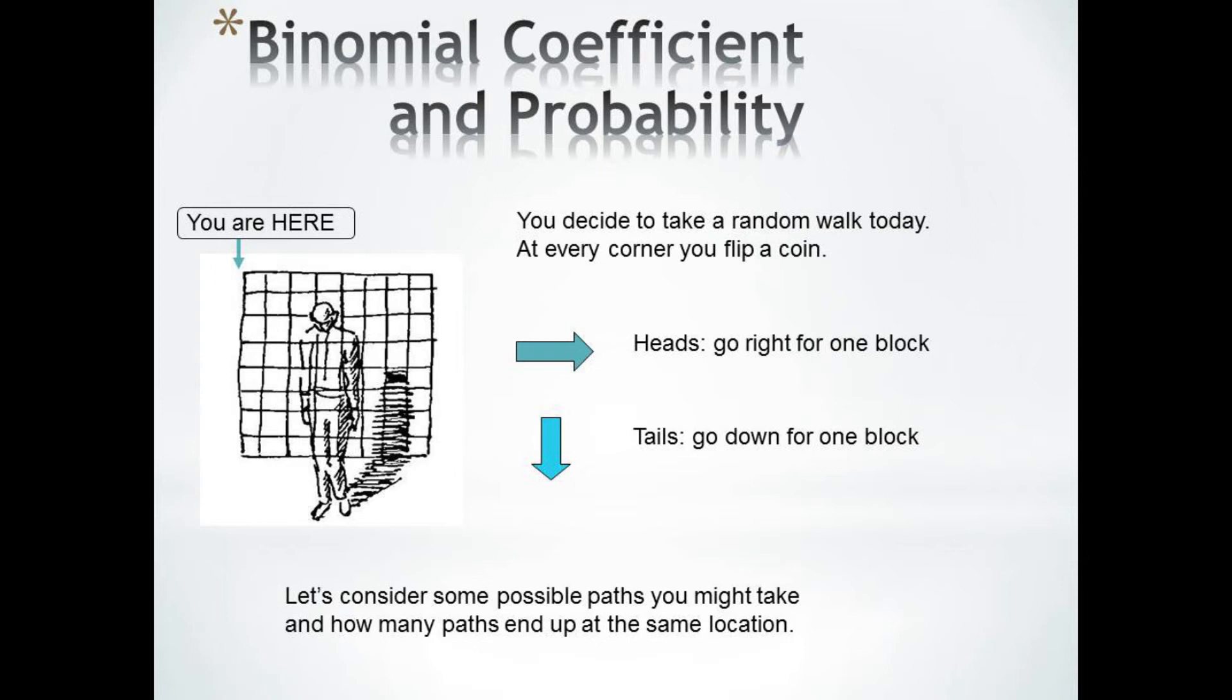Consider this problem of taking a random walk. A man starts at the top of a rectangular grid of streets. He decides to flip a coin every time he comes to a corner. If its heads, he will go right. If its tails, he will go down.